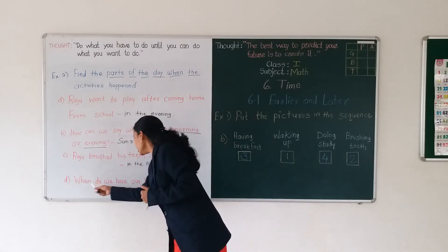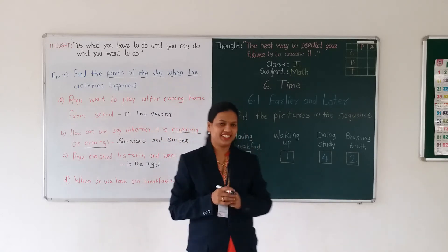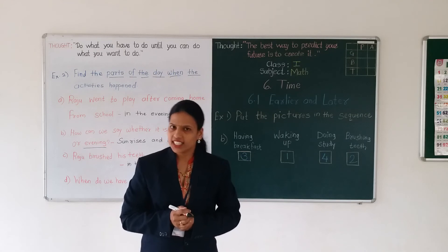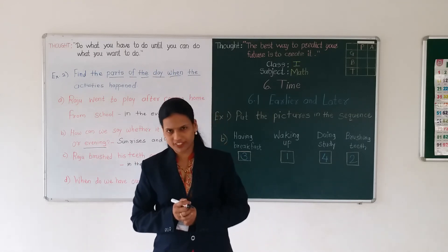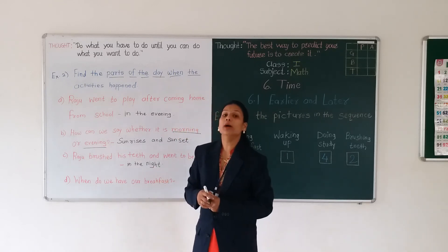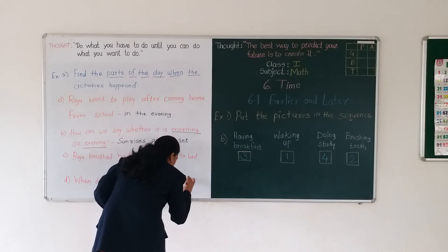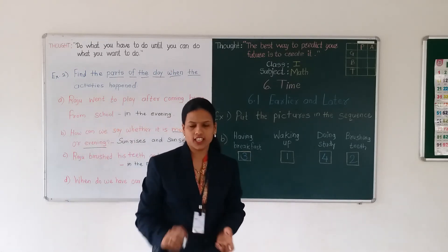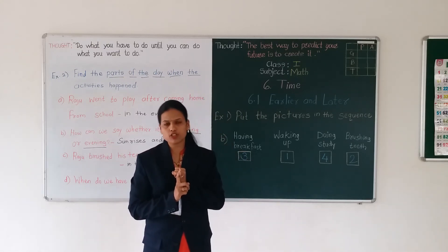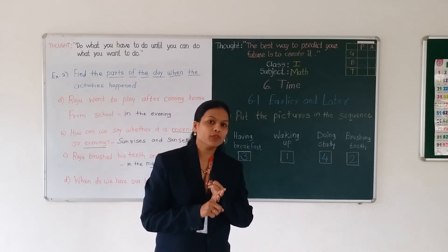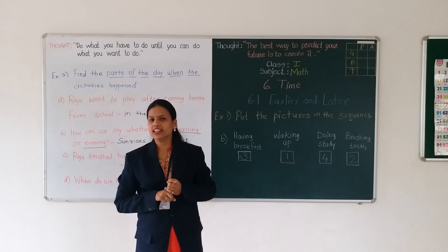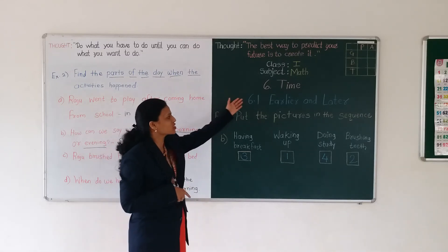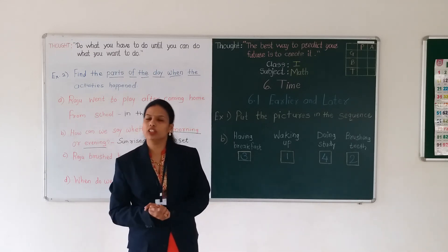And the last activity: when do we have our breakfast? In the morning. We are taking our breakfast in the morning. At noon time we are having our lunch, and in the night time we are having our dinner. So having breakfast - we take that in the morning. Understood? So this is about concept 6.1: earlier and later, and also the parts of the day.